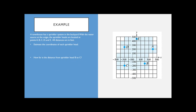Here's an example where the graph is actually a grid representing a 2D space — basically a map. A townhouse has a sprinkler system in the backyard with the water source at the origin, and sprinkler heads are located at points A, B, C, D, and E, with all distances in feet. This is a different type of graph — instead of tracking something changing over time, we're literally mapping locations in space, like movement on a map.